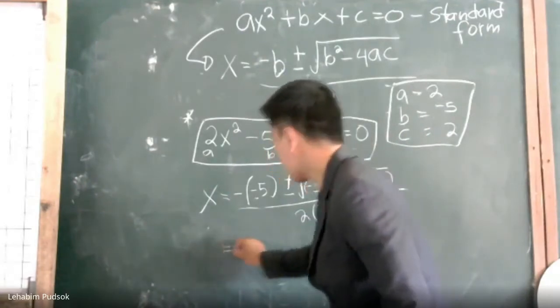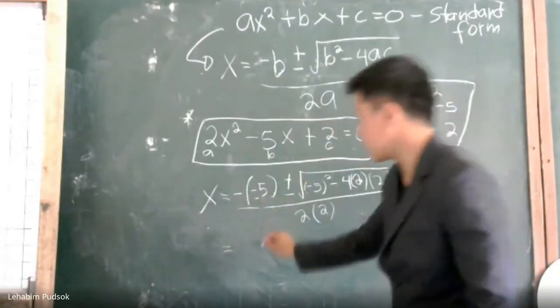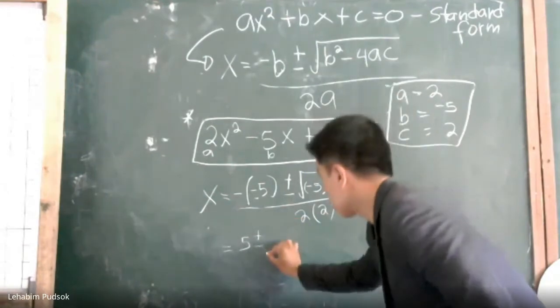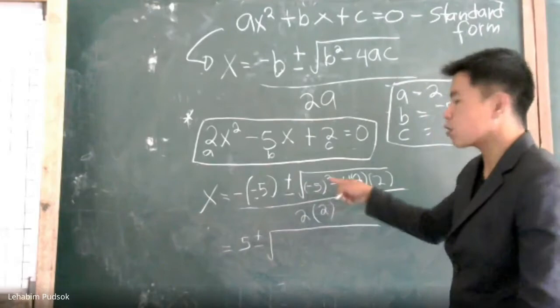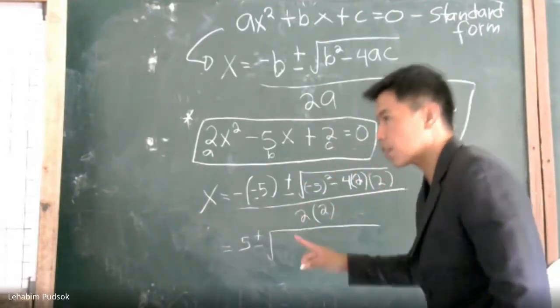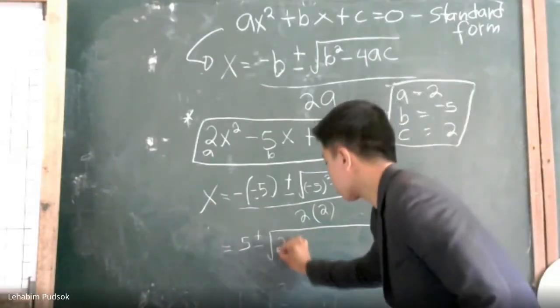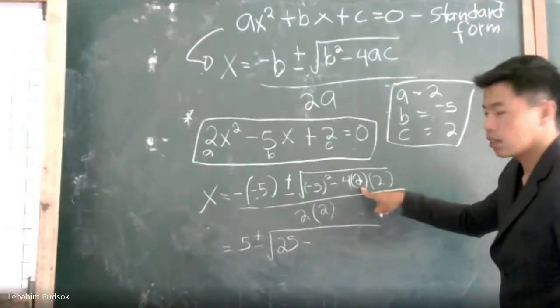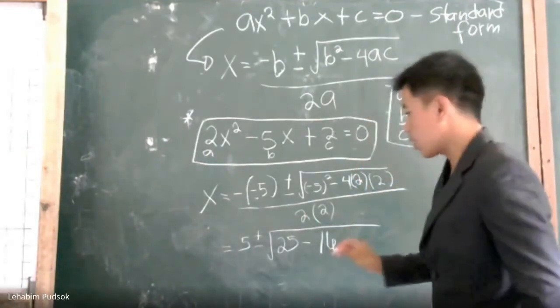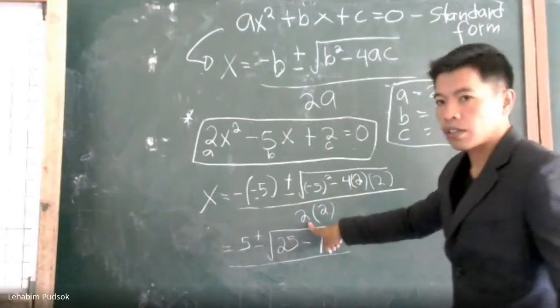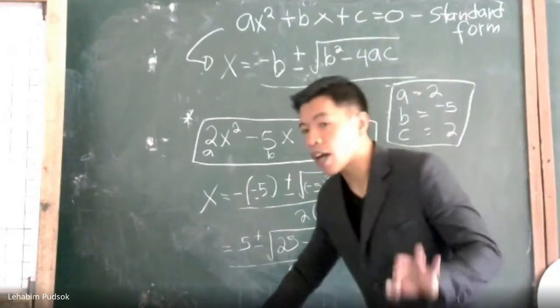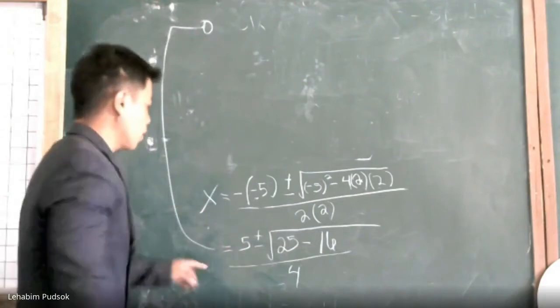Now simplify: negative of negative five is positive five, plus or minus the square root of negative five squared, which is 25, minus four times two times two. Four times two is eight, times two is 16. So we have 25 minus 16 over the denominator, which is two times two equals four.